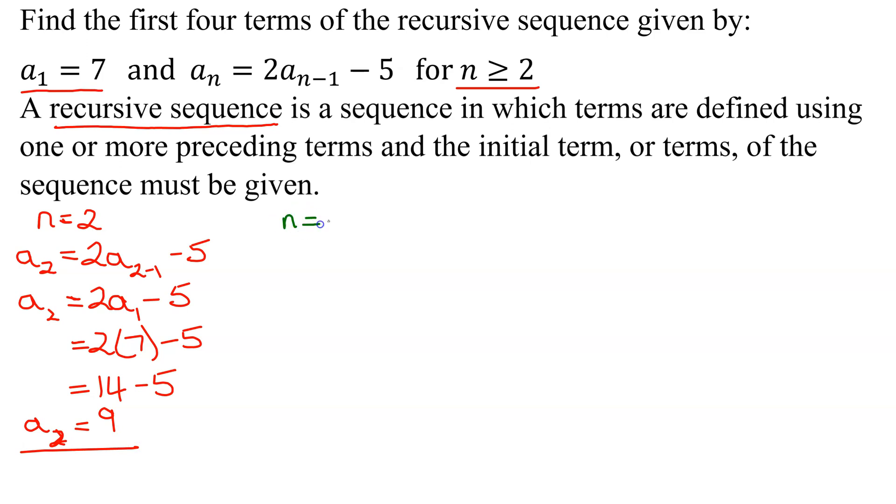To get the next term, we just plug in n equals 3 into our formula. a sub 3, the third term, equals 2 times a n minus 1, so that's 3 minus 1 minus 5. So the third term is twice, 3 minus 1 is 2,